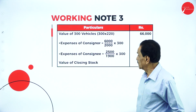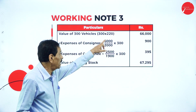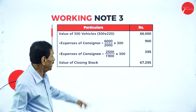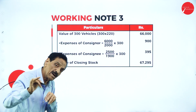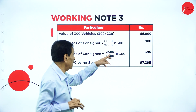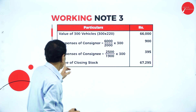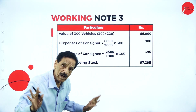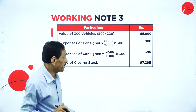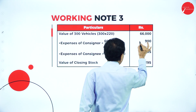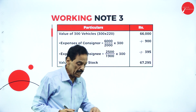In terms of rupee value: value of 300 vehicles at cost Rs. 200 each = Rs. 60,000. Add non-recurring expenses of consignor: Rs. 6,000 for 2,000 vehicles; for 300 vehicles = Rs. 900. Expenses of consignee: out of 2,000 vehicles, 100 were lost, so 1,900 vehicles reached. Expenditure is Rs. 2,500 for 1,900 vehicles; for 300 vehicles = Rs. 395. Total value of closing stock = Rs. 67,295.